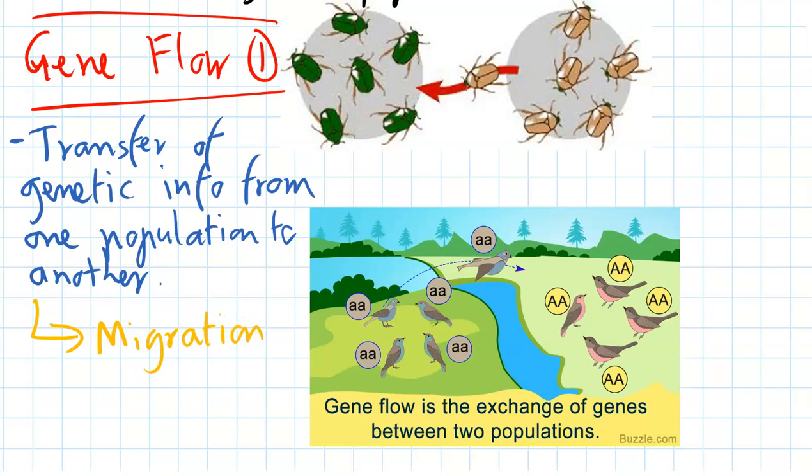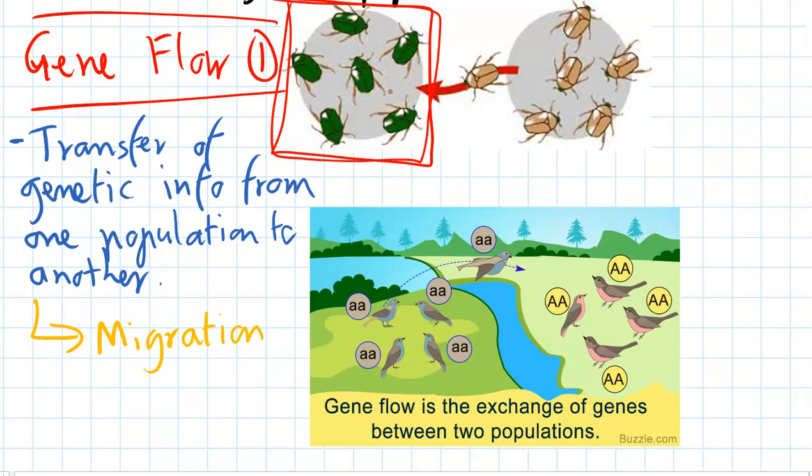Here are a few examples. We've got a population of green beetles. There's no variation here, so there's not going to be any natural selection happening. But if a few beetles from the beige beetle population happen to migrate across, they'll be introducing their genes and their alleles into the gene pool over here. That means that evolution through natural selection can start happening.